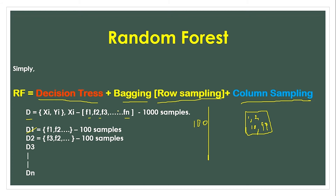Let's use the Titanic dataset as an example. The dataset has columns: ID, survived, pclass, fare, and gender. In the first subset, we use gender and pclass. In the next subset, we use gender and fare. So each subset uses a different combination of columns.